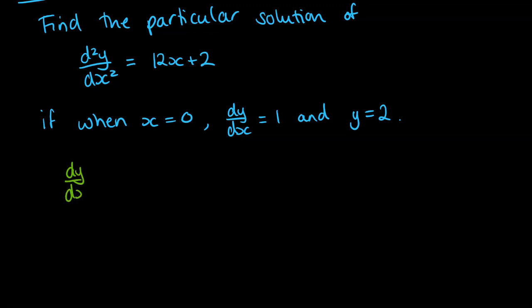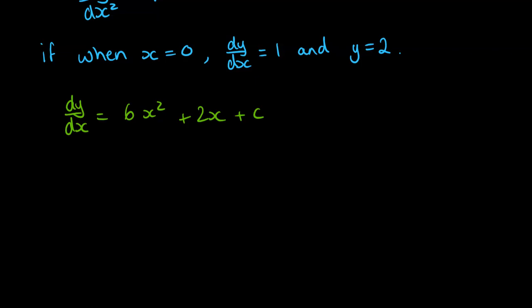But we have to step through to dy/dx first. So dy/dx we can get by integrating 12x + 2. So that's 12x²/2 + 2x + c. Now that 12 over 2 we can simplify to being 6. So we've got 6x² + 2x + c. Now we need to use this information here to work out the c. So when x is 0, dy/dx is 1. So 6 times 0² + 2 times 0 + c equals 1. So obviously c must be 1.